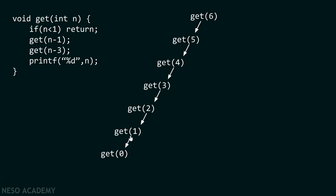We return back to the get(1) function — that is the point where we left off. After this we again have to call the get function, but this time we subtract three instead of one. As n equals one, one minus three is minus two, so we call get(-2). The n value is minus two, and minus two is less than one, so we return back to get(1).